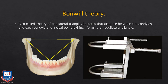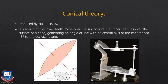The second is Bonwill's articulator, based on the theory of the equilateral triangle, which states that the intercondylar distance and the distance from the condyle to the center of the lower anterior teeth at the midline form an equilateral triangle. Based on this, Bonwill made his own articulator known as Bonwill's triangle, with 4-inch sides on each side.